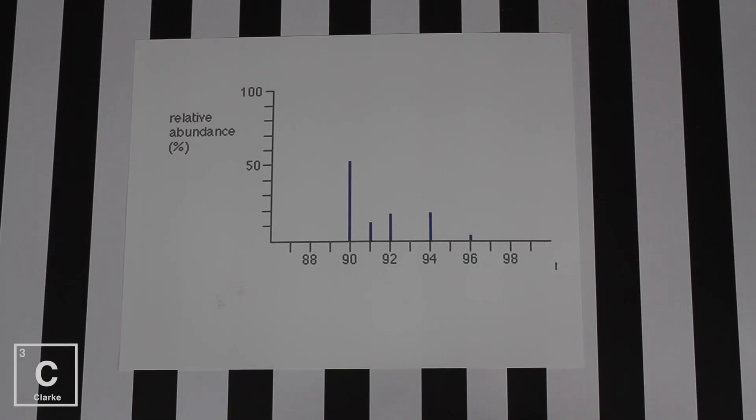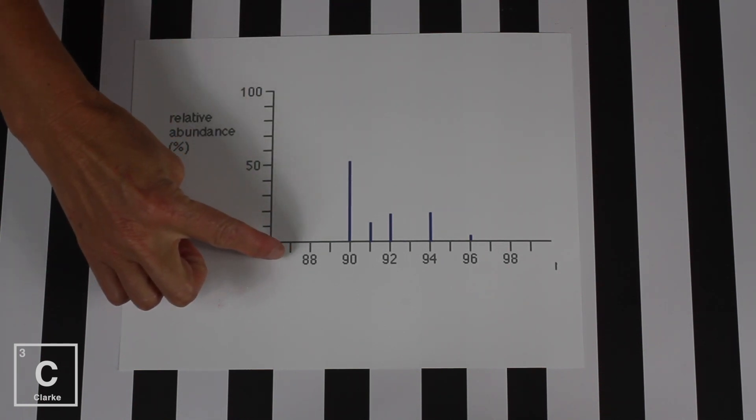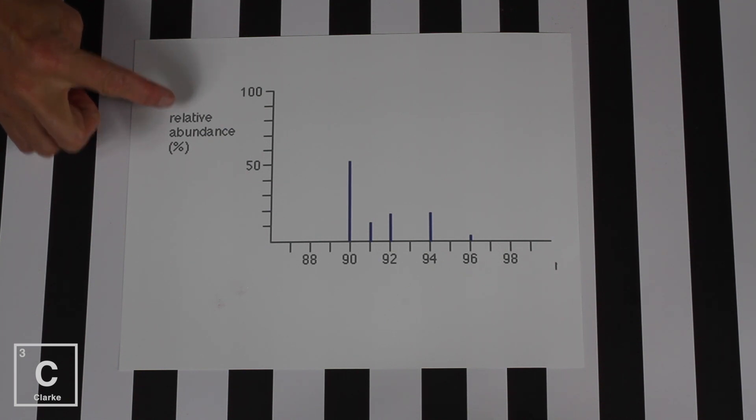There is this machine called a mass spectrometer and it also can give you that same information that's asked in the question. We would use a mass spectrometer to identify unknown elements. These represent the isotopes. The mass number is on the x-axis, the relative abundance is on the y-axis.